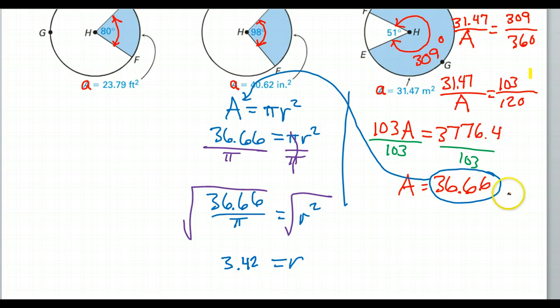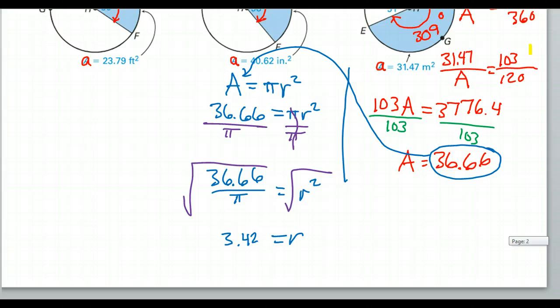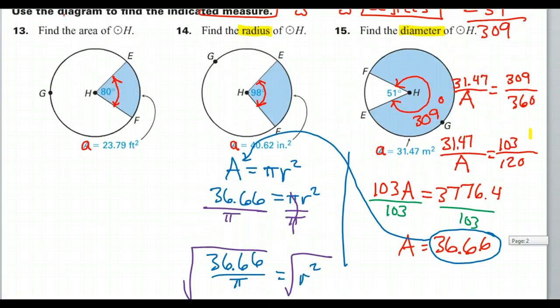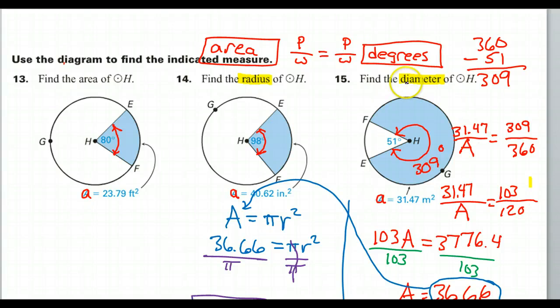Okay, now we're getting somewhere. But, guess what? That's not the answer either. We're getting closer. First, we found the area. Now, we've got the radius. But, that's still not what they asked us for. They asked us for the diameter.